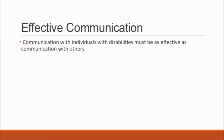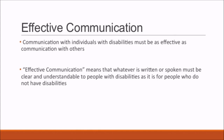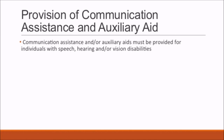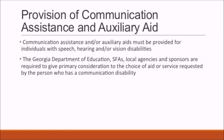Effective Communication. Communication with individuals with disabilities — including students, their families, and guardians and companions — must be as effective as communication with others. This means that whatever is written or spoken must be as clear and understandable to people with disabilities as it is for people without disabilities. Communication assistance and auxiliary aids must be provided for individuals with speech, hearing, or vision disabilities. The Georgia Department of Education, SFAs, local agencies, and sponsors must give primary consideration to the choice of aid or service requested by the person with a communication disability.